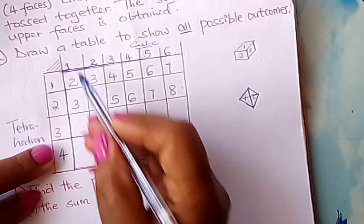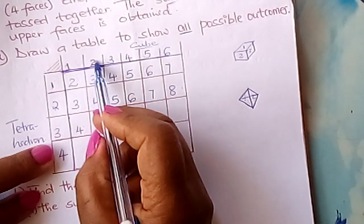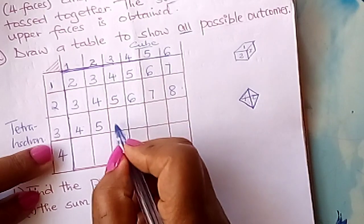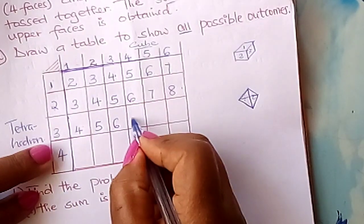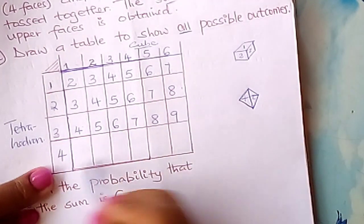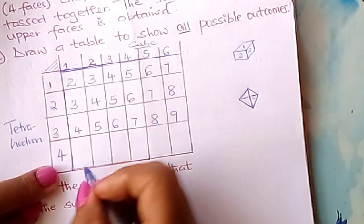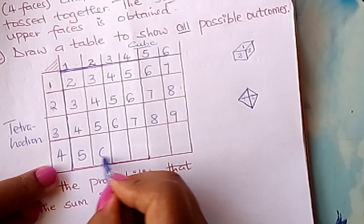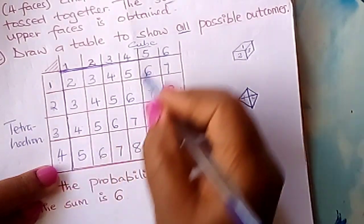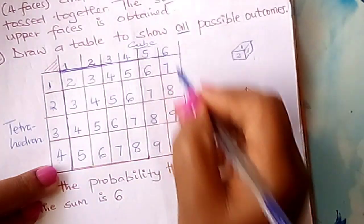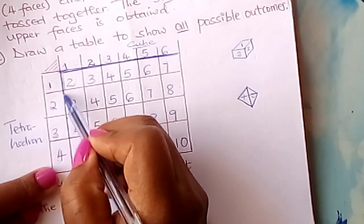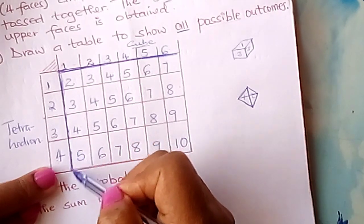For the third row: three plus one gives four; three plus two gives five; three plus three gives six; three plus four gives seven; three plus five gives eight; three plus six gives nine. For the last row: four plus one gives five; four plus two gives six; four plus three gives seven; four plus four gives eight; four plus five gives nine; four plus six gives ten.